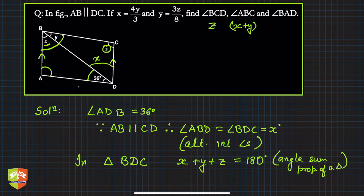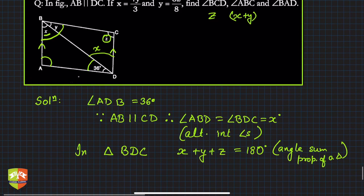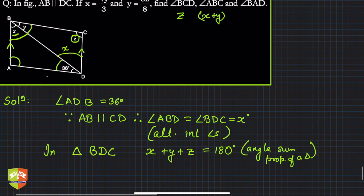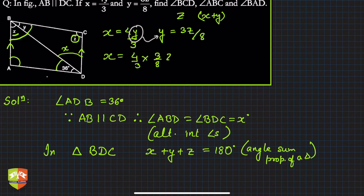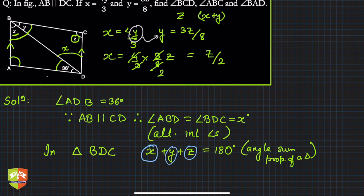Now let's reduce everything to one variable. We have x = 4y/3 and y = 3z/8. Substituting y into x: x = (4/3) × (3z/8) = z/2. So x = z/2 and y = 3z/8. We can now replace x, y, and z in the equation with expressions in z only: z/2 + 3z/8 + z = 180 degrees.